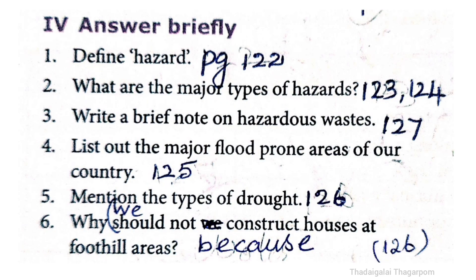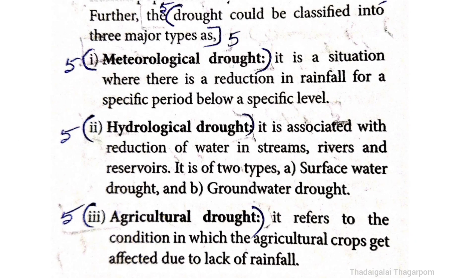The answer is given on page 126. Drought could be classified into three major types: first - meteorological drought; second - hydrological drought; third - agricultural drought.